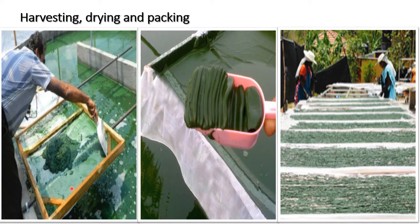In froth flotation, the cultivated algae are aerated to create a froth and the algae are skimmed from the top. Using a mesh, we can also harvest the algae. After processing through the mesh, a slurry can be obtained.